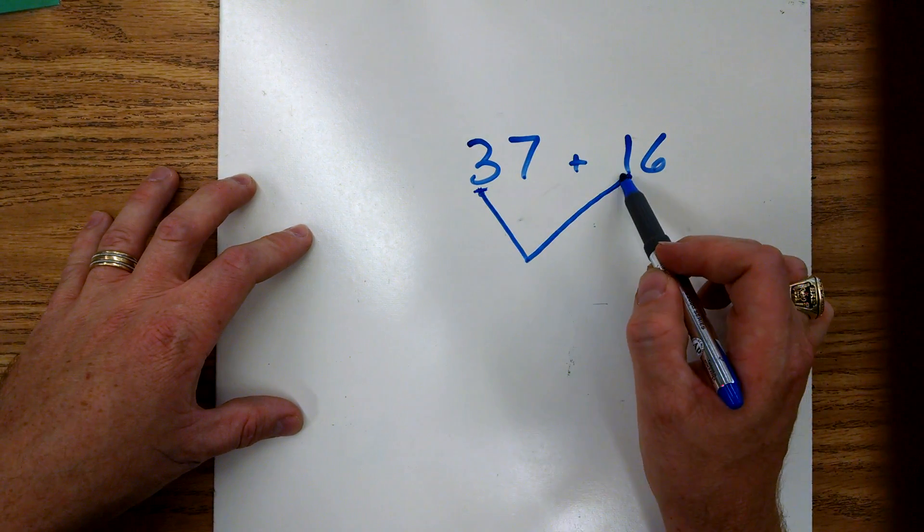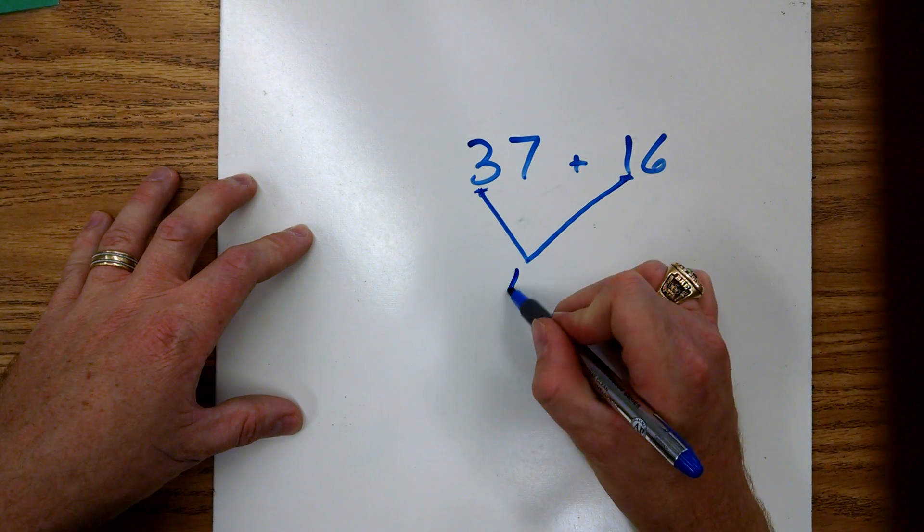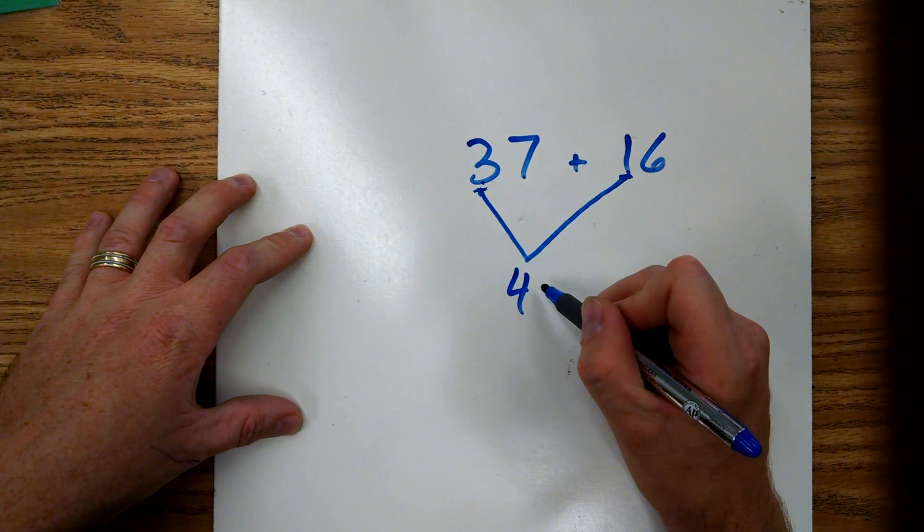So since this is in our tens, we have to make sure we add it to our tens in our other number. Three plus one is four, but we know that that's really three tens and that's really one ten, so that's really 30 plus 10 and that's 40.